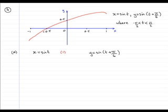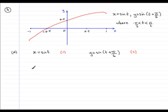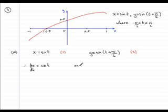Now in order to get the equation of the tangent I need to find the gradient at any point on the curve, that means find dy/dx. We should know that to find dy/dx when we've got parametric equations we have to find dx/dt and dy/dt first. So differentiating equation one gives us dx/dt equals cos t.